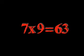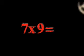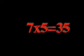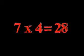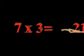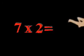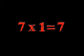Seven times nine: sixty-three. Seven times eight: fifty-six. Seven times seven: forty-nine. Seven times six: forty-two. Seven times five: thirty-five. Seven times four: twenty-eight. Seven times three: twenty-one. Seven times two: fourteen. Seven times one: seven.